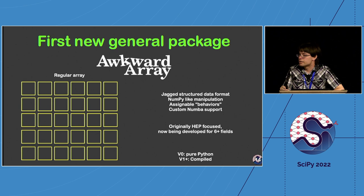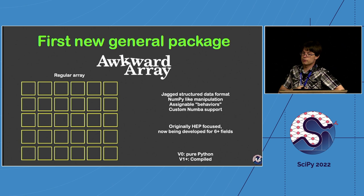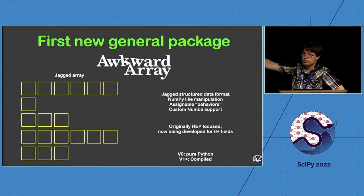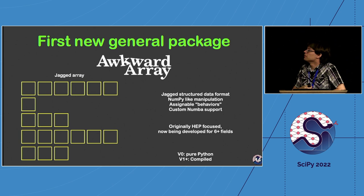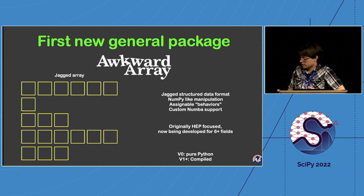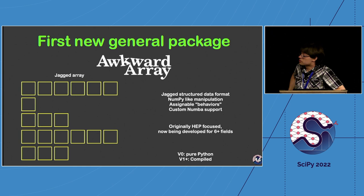The first generally useful package that came along for other domains was awkward array, developed to support uproot. Uproot reads data formats that are sometimes rectangular arrays but sometimes jagged arrays with variable dimensions. This jagged structured format became awkward array, originally written in pure Python and then later compiled as well. Originally focused at HEP, it's now being used in astronomy, single-cell genomics, and oceanography.